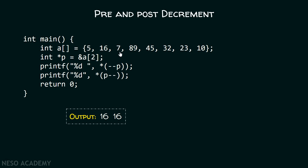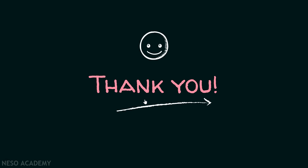Initially, pointer is pointing to this location. After decrement, it will point to this location. Therefore, 16 will get replaced over here. But as we can see, this is post decrement. Therefore, it will get assigned with the address of this value, and hence after dereference, we will get this value only. Therefore, the output will be 1616. Okay friends, this is it for now. Thank you for watching this presentation.